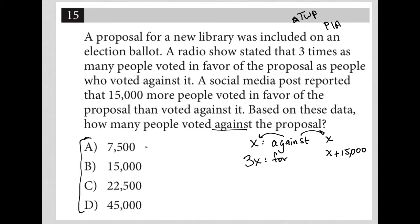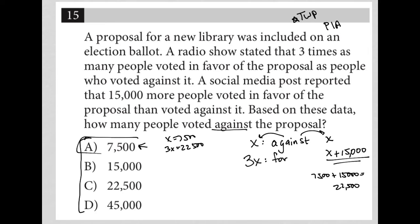Let's see if choice A were the correct answer — that would mean x equals 7,500, and three times that many people voted for, so 7,500 times three is 22,500. So x equals 7,500 and three x equals 22,500. Is it also true that 7,500 plus 15,000 equals 22,500? Yes, in fact it is. So choice A has to be right.